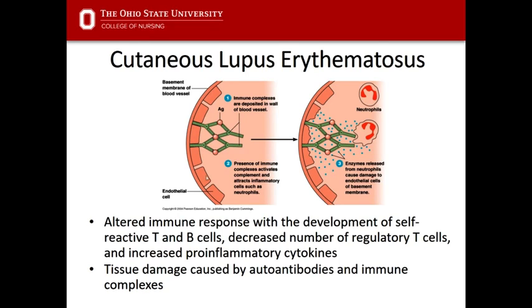Because of the immune complexes formed, which type of hypersensitivity would lupus be? Pause and think about it. Systemic forms of lupus are generally classified as type 3 due to the immune complexes. However, the cutaneous form is technically a mix of both type 2 and type 3 — some single antibody bound to antigen leads to disease manifestations, and some immune complexes do as well. So cutaneous lupus is type 2 and type 3 combined.